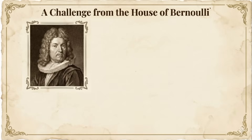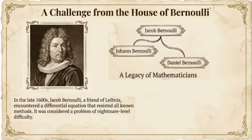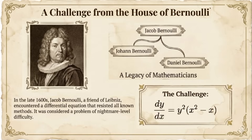Let's talk about Jacob Bernoulli — the older brother of Johann Bernoulli. Yes, the same Bernoulli family that produced eight mathematicians across three generations. Jacob and Leibniz were friends who often met socially, discussing the latest mathematical developments. One day, Jacob encountered a differential equation that seemed impossible to solve: dy/dx = y² · (x² − x). In the late 1600s, differential equation theory was in its infancy, and this equation was considered nightmare-level difficulty. But Jacob Bernoulli remembered Leibniz mentioning the separation of variables method, and thought — why not give it a try?